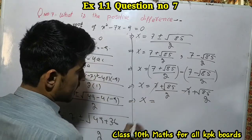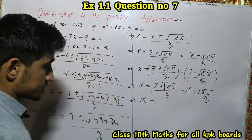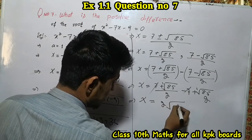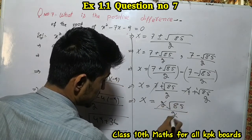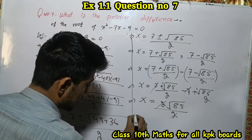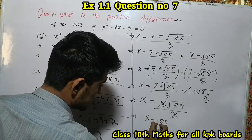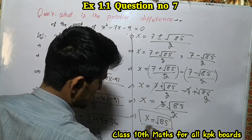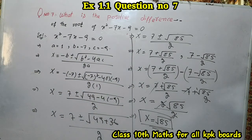Therefore x equals √85 divided by 2, which gives the positive difference. This is the desired positive value.